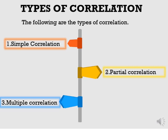Next, multiple correlation. Multiple correlation studies the relationship between more than two random variables. For example, crimes in a city may be influenced by illiteracy, increased population, and unemployment in the city. These variables are multi-correlated.